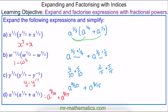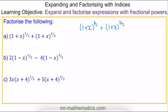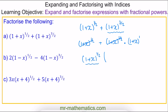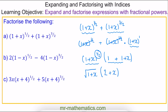Let's move on to factorizing expressions. For question a, we need to identify what is common to both terms. Using the inverse of the multiplication rule, we can see that one plus x to the half is common to both, because we can multiply x to the power of a half by one plus x to the power of one. So one plus x to the power of one half goes outside the bracket. We multiply it by one to get the first term, and then we need another one plus x term. Simplifying by adding the ones together and noting that a power of a half means square root, we get the square root of one plus x, multiplied by two plus x. This is fully factorized.